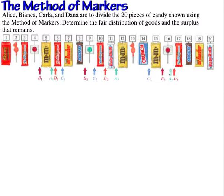Markers could be a chip or anything that acts as a placeholder. If we look at player A's first chip, it includes all of the items from 1 to 5. Those five pieces of candy are the first fair share according to player A.